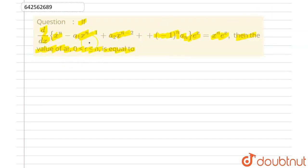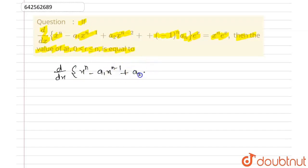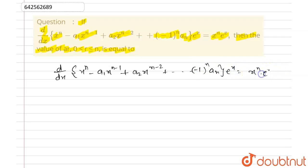We are given that d/dx of (x^n − a1·x^(n−1) + a2·x^(n−2) + ... + (−1)^n · a_n · e^x) equals x^n · e^x. We have to find the value of a_r, the general term, where r lies between 0 to n.